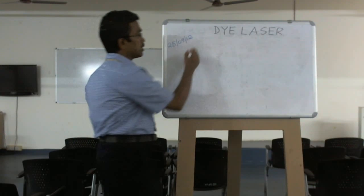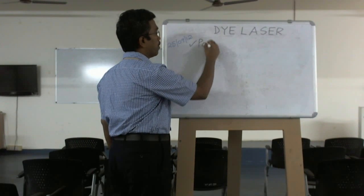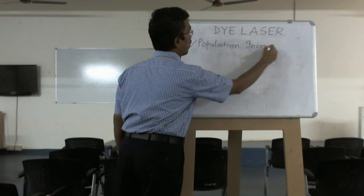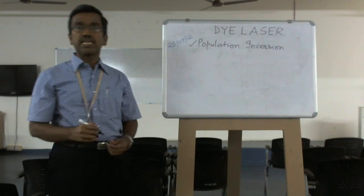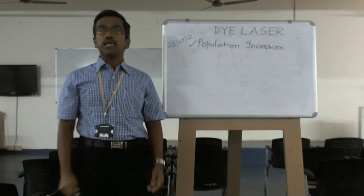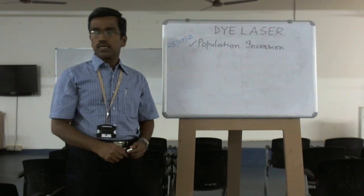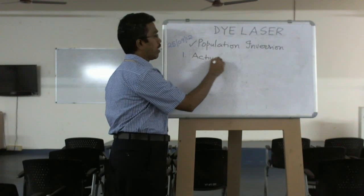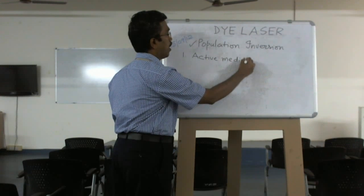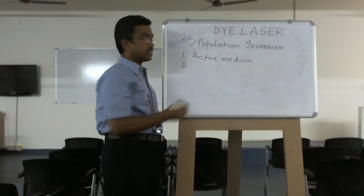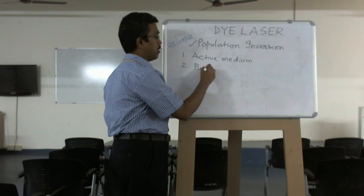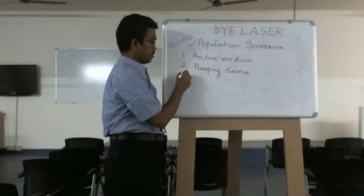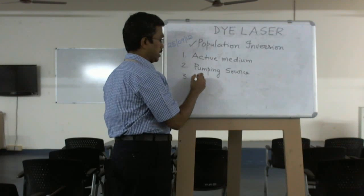What is the principle of laser? We know that the principle is population inversion. The principle of any laser is population inversion, and there are three major components required for any laser: one is active medium, the second one is pumping source, and the third one is resonators.